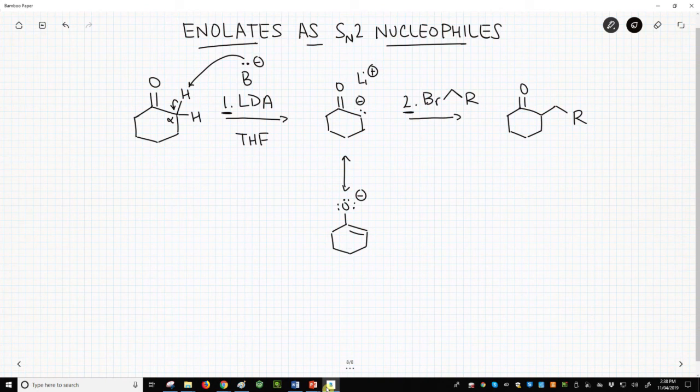Number two, step two. We will have an alkyl halide added to the reaction. The enolate will attack the halide at the carbon, kick out the leaving group. This is an SN2 reaction.